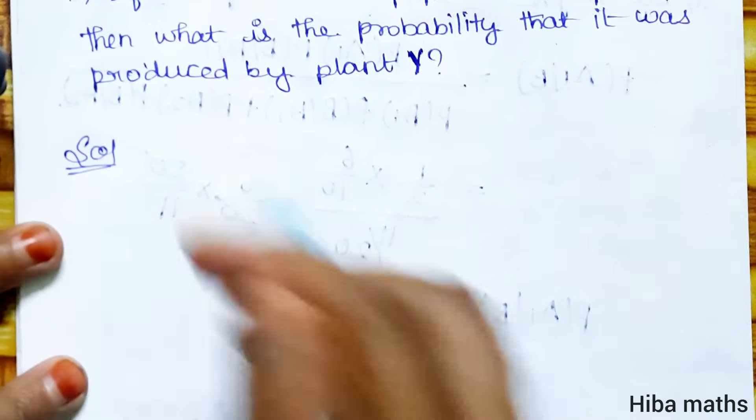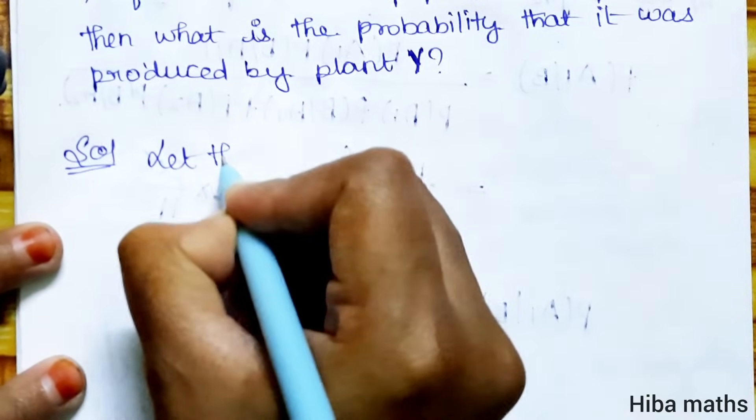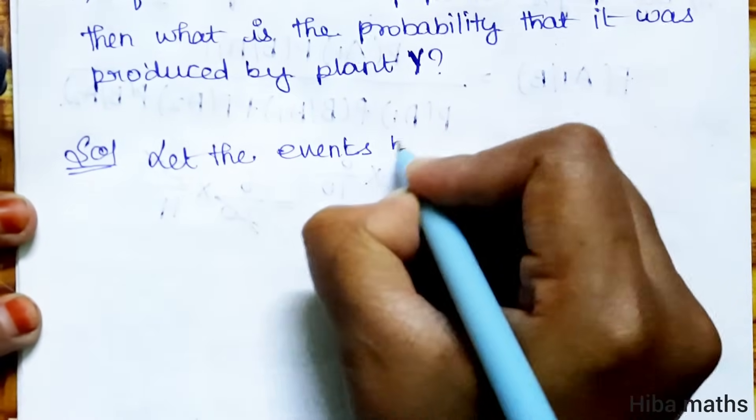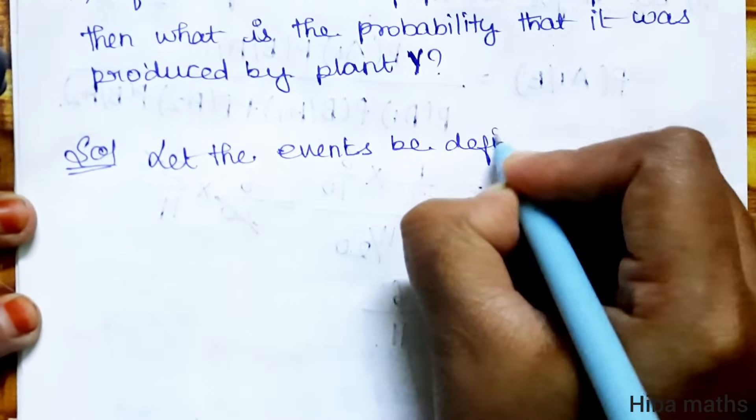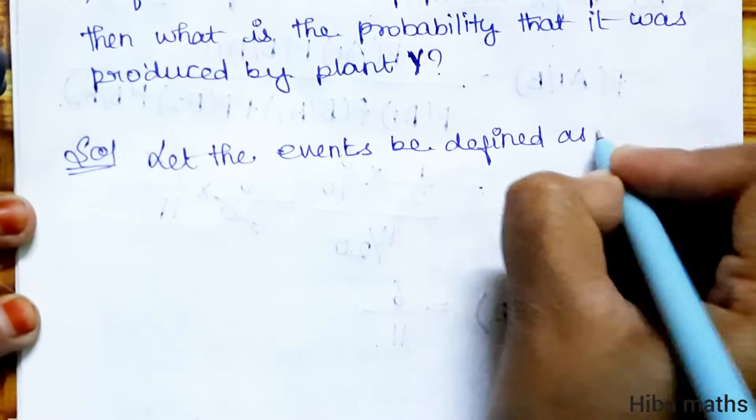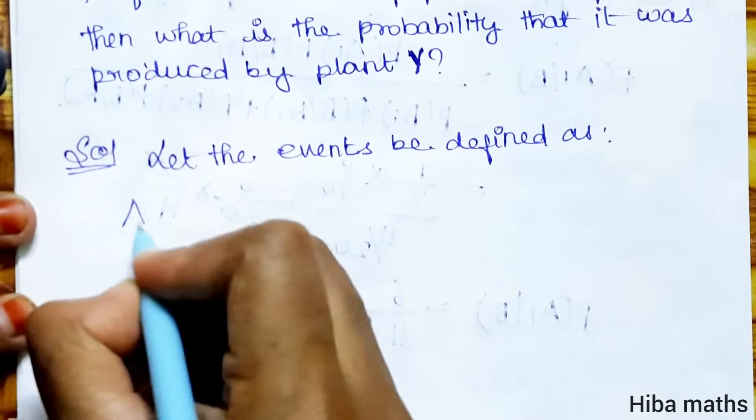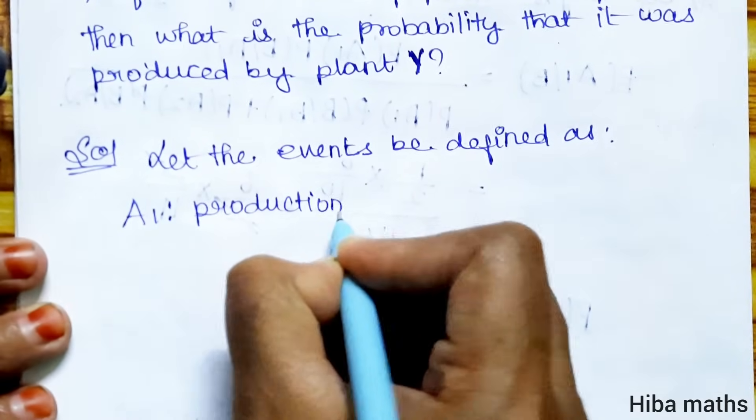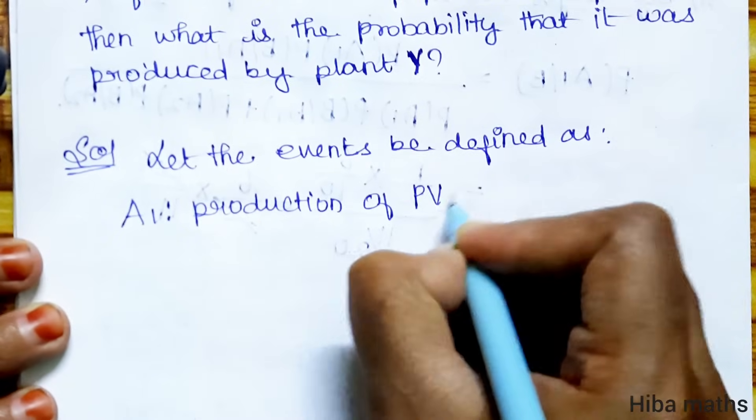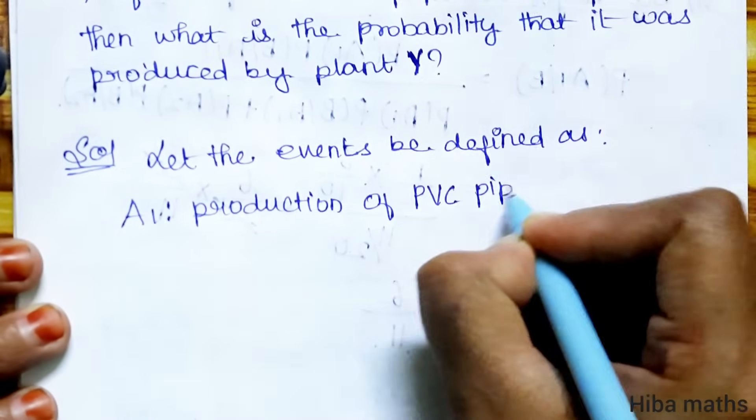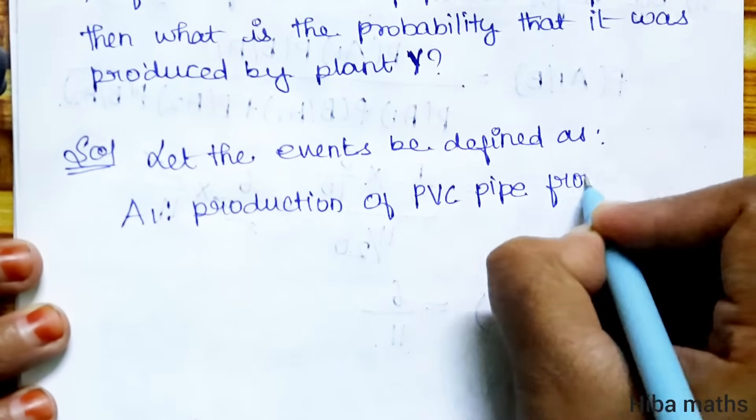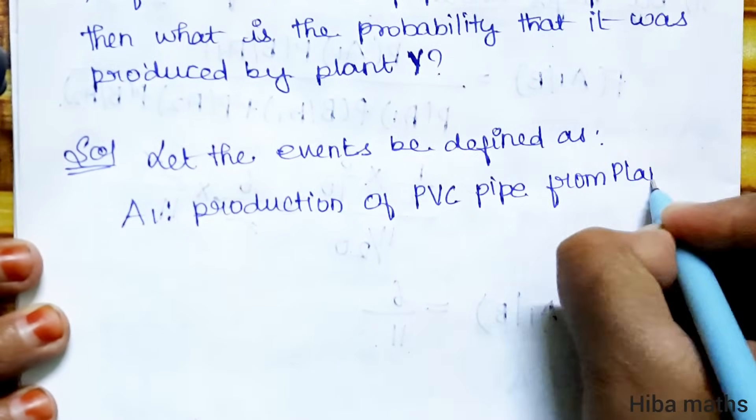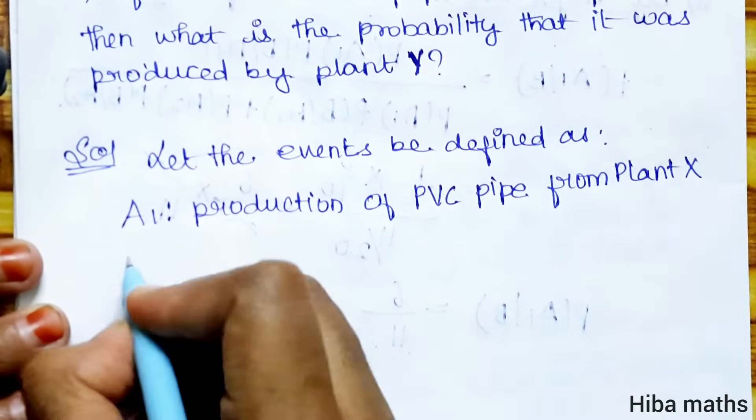Understand the solution. Given is, let the events be defined as A1 is production of PVC pipe from plant X. Now, A2, same...